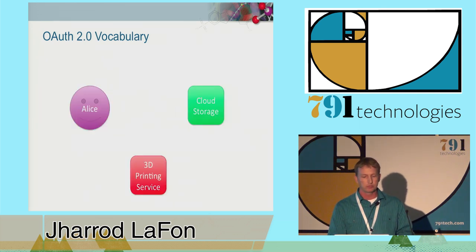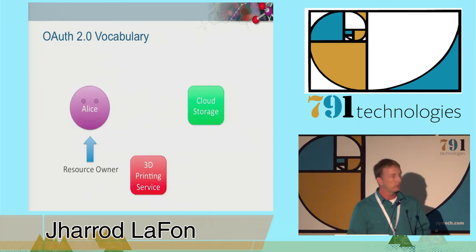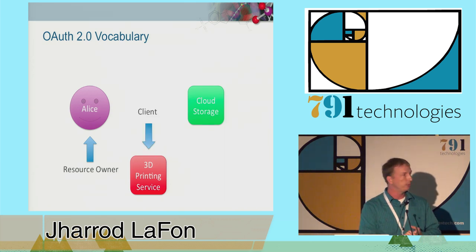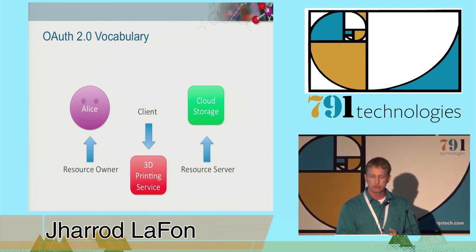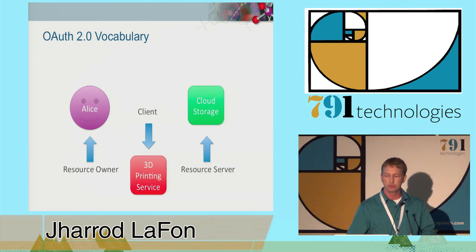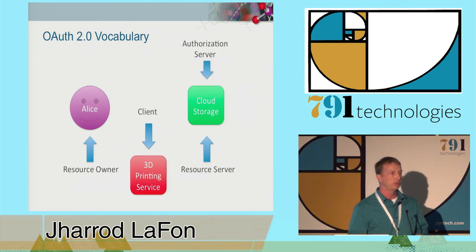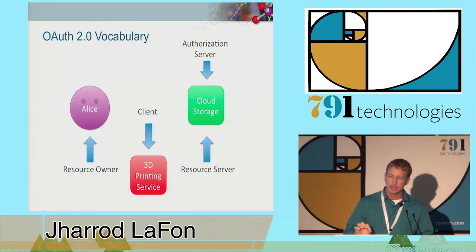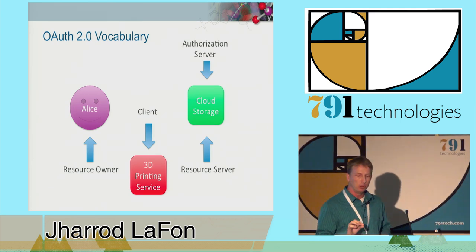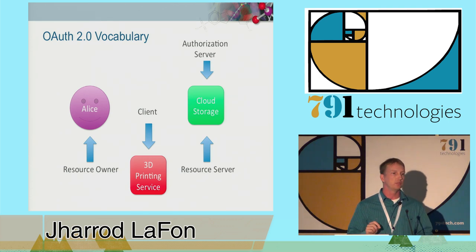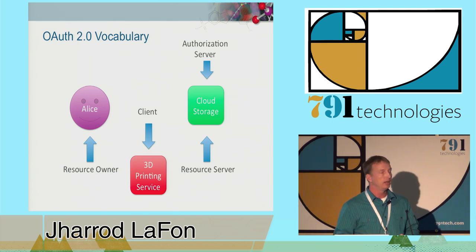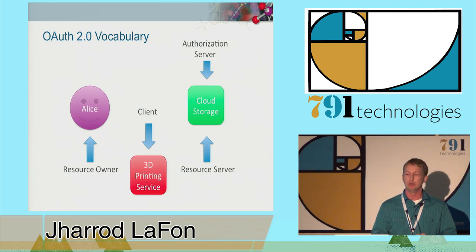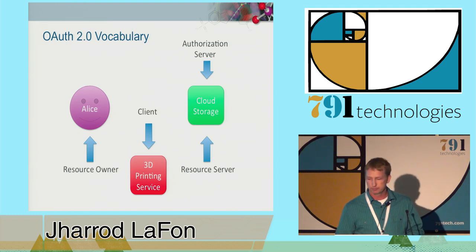Using our previous example: Alice is the resource owner. The client is the 3D printing service. And the cloud storage service is both the resource server and the authorization server. There's nothing in the spec that says one entity has to be both of these roles, but it doesn't prohibit that either, and it's a common example that you'll see if you use OAuth.